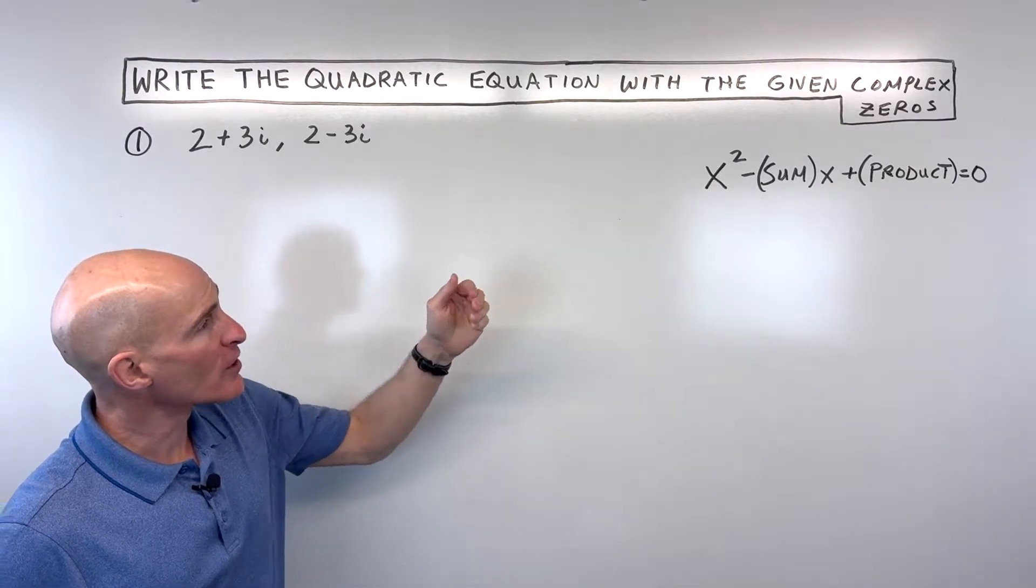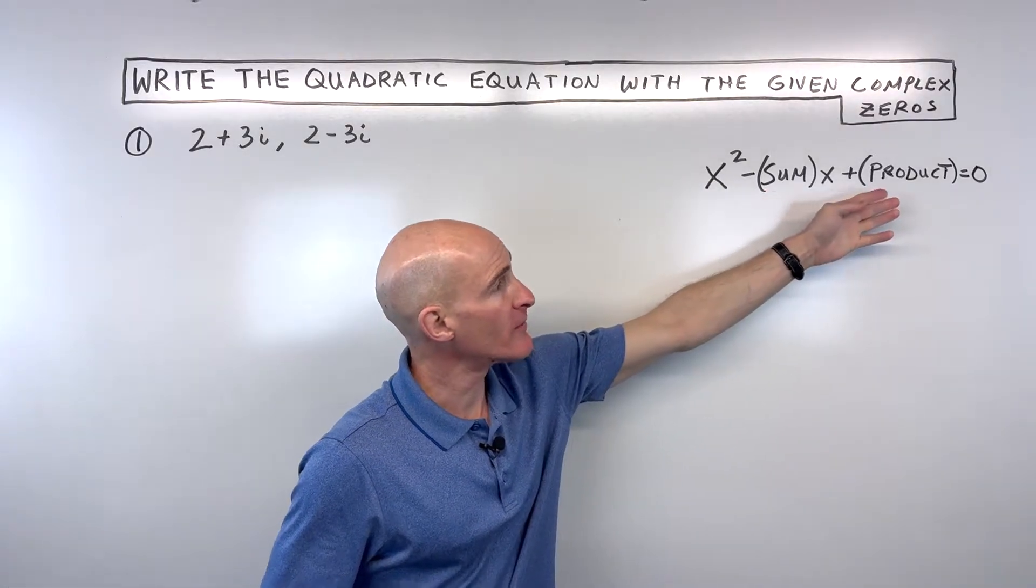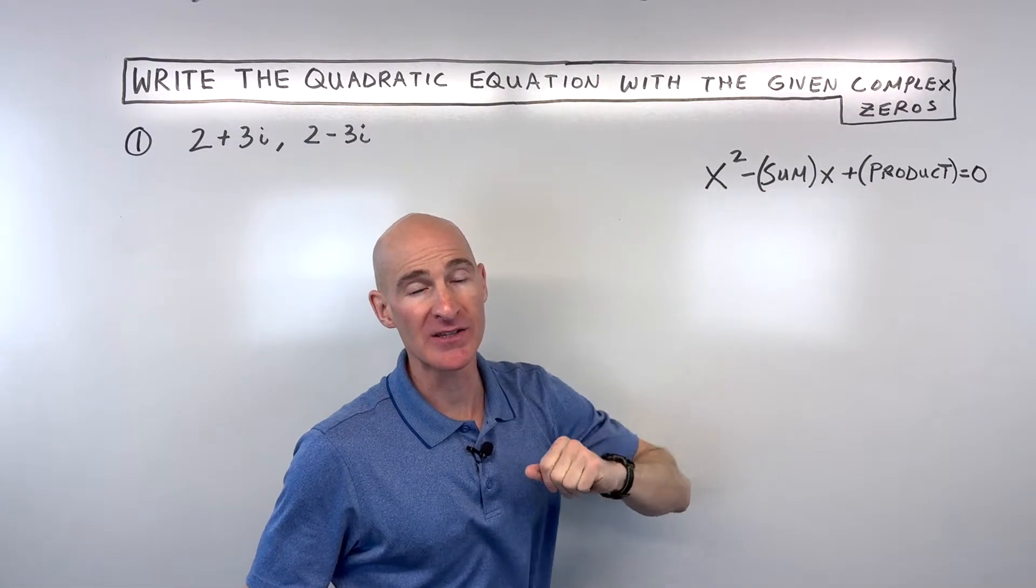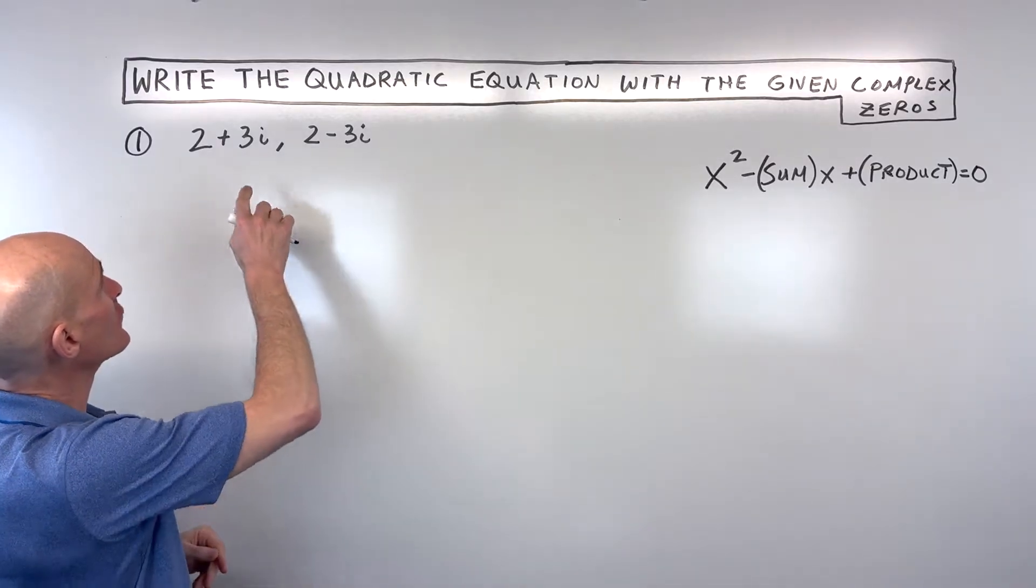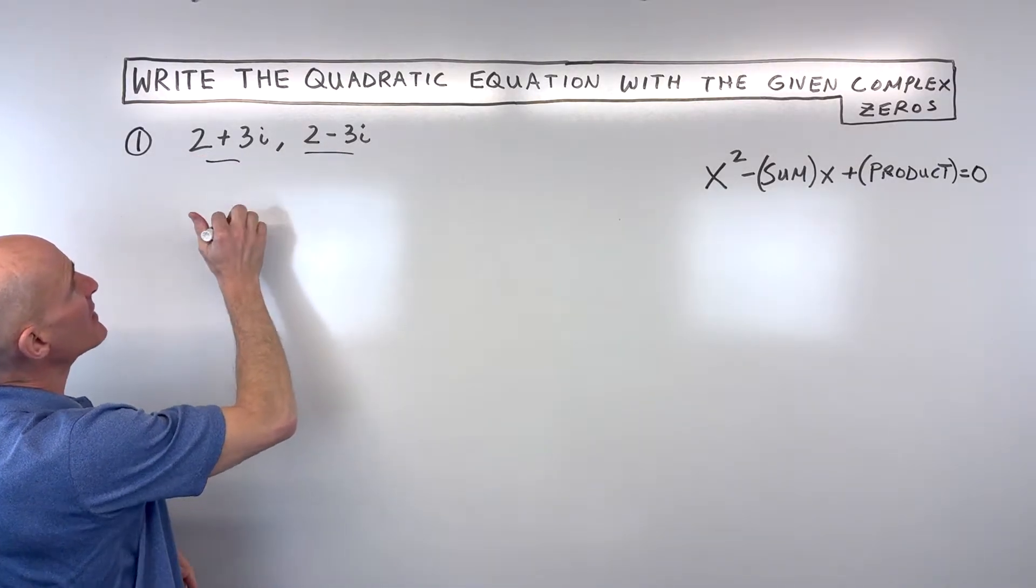So what we're going to do is we're going to find the sum of the zeros and we're going to find the product of the complex zeros. So let's go ahead and do that. So if we're given these two zeros, let's go ahead and add them together.